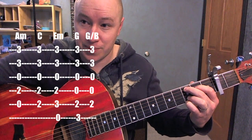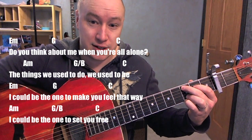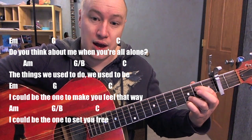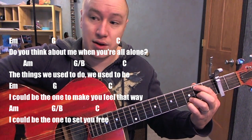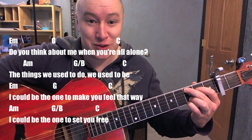Back to C. So overall it's E minor to G, to C, A minor, G over B, C.